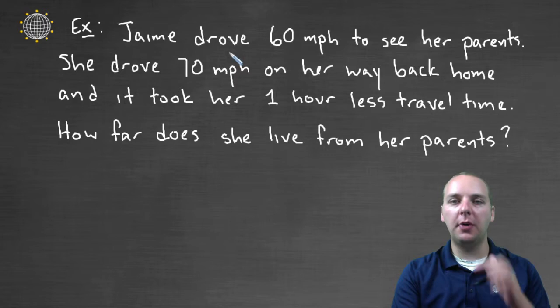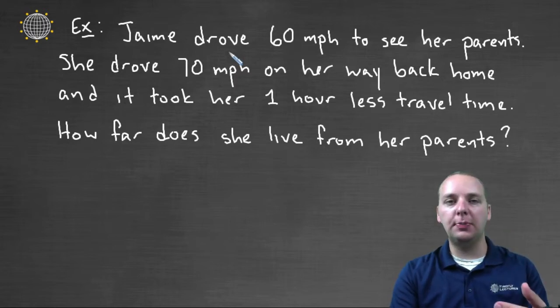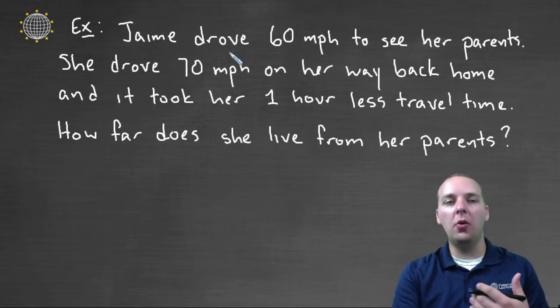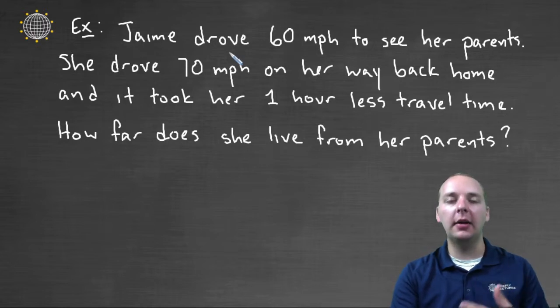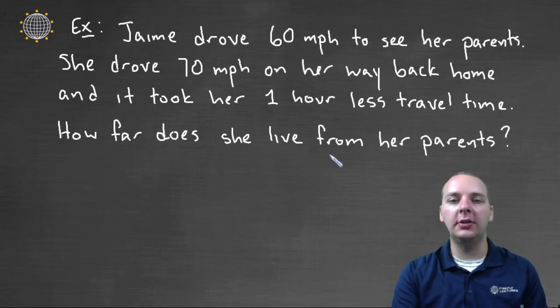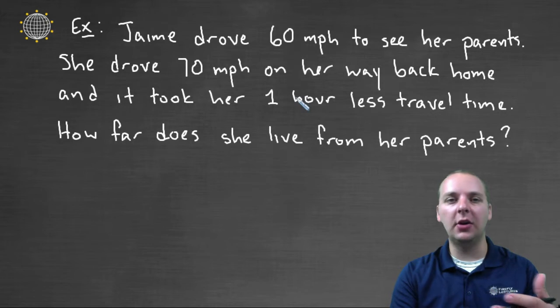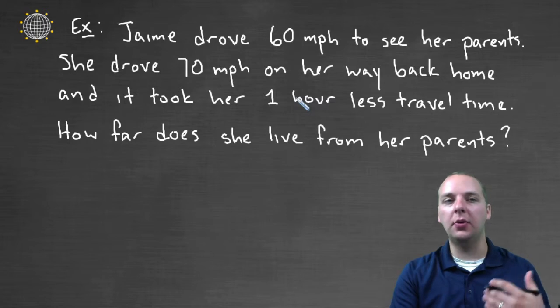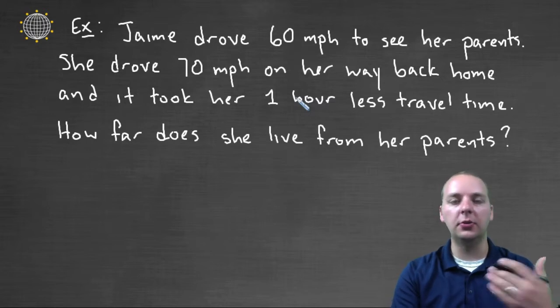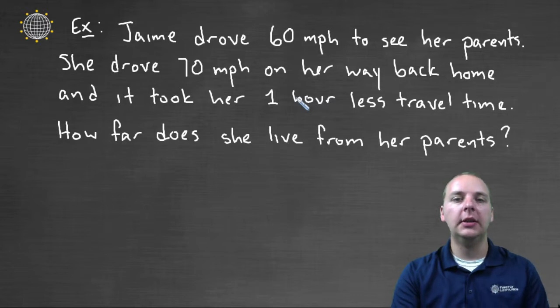It says, Jamie drove sixty miles per hour to see her parents. Then she drove seventy miles per hour, for whatever reason, on her way back home. And it took her one hour less travel time coming back, because she's driving faster. She got home quicker. And then the question is, how far does she live from her parents? Well that's a crazy question to ask, because nowhere in these sentences did it really talk about distance. It talked about rate, and it talked about time, but it didn't mention how many miles away she was from her parents, or from her parents back to her house.